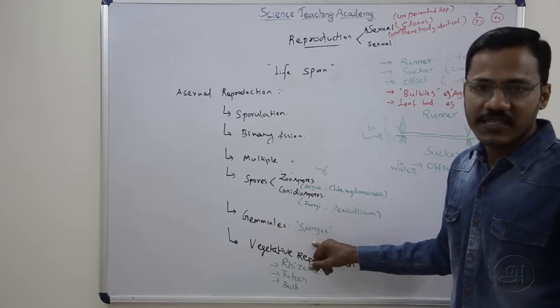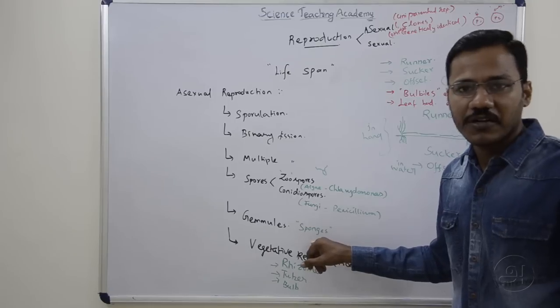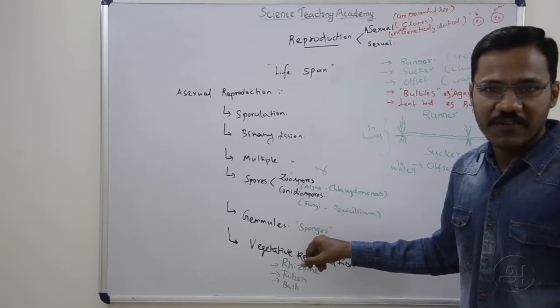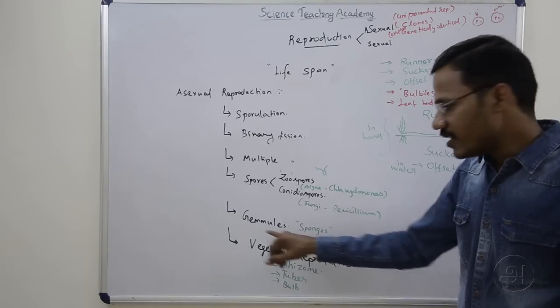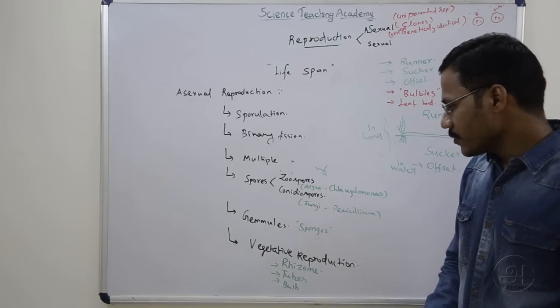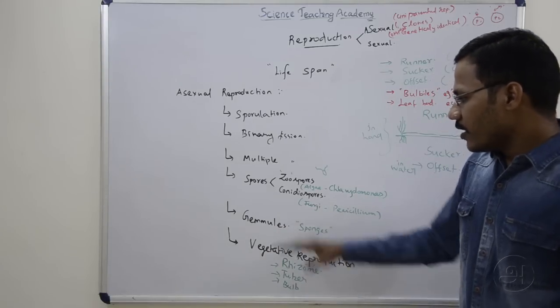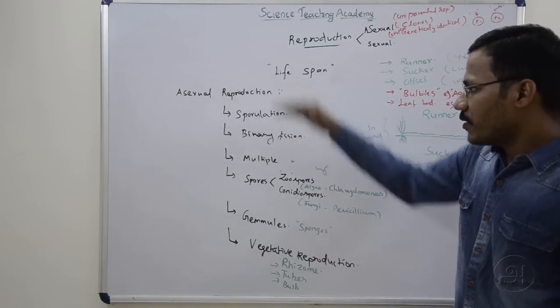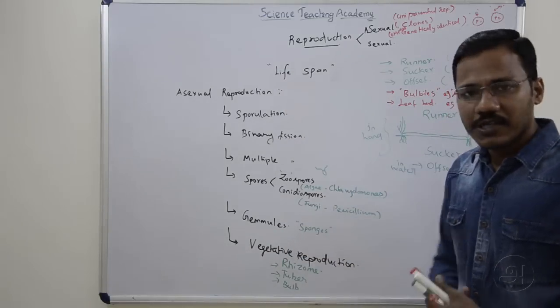Gemmules are found in sponges — Porifera. This is a reproductive structure. This is asexual reproduction. Sometimes asexual reproduction and vegetative reproduction are considered different categories.